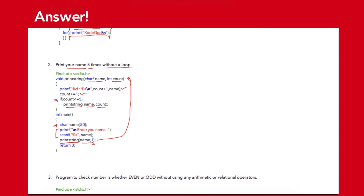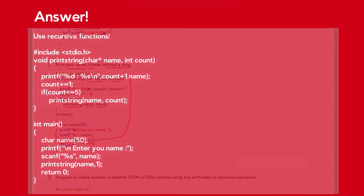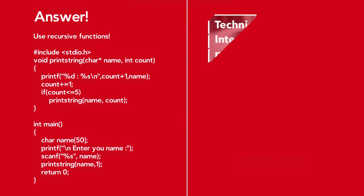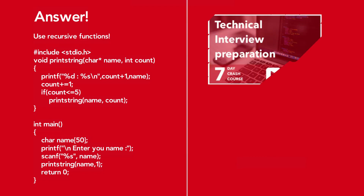Before the second call the number was incremented to two, so in the second call count would be two. Subsequently the third call will be made, the fourth call, the fifth call, and in the sixth call this condition will be false and there won't be any further calls. That is how we can print a given string five times without using a loop. I hope you really enjoyed the question.